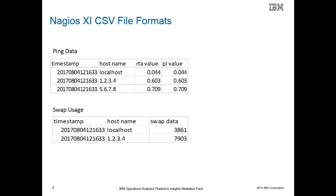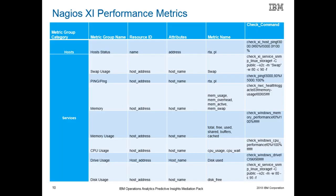Other CSV files are ping data and swap usage. The following slides show a table that illustrates how the metric content from the CSV files are used in the Predictive Insights product. The metric groups for Nagios are host status, swap usage, ping, and memory. Other metric groups for Nagios are memory usage, CPU usage, and drive and disk usage.